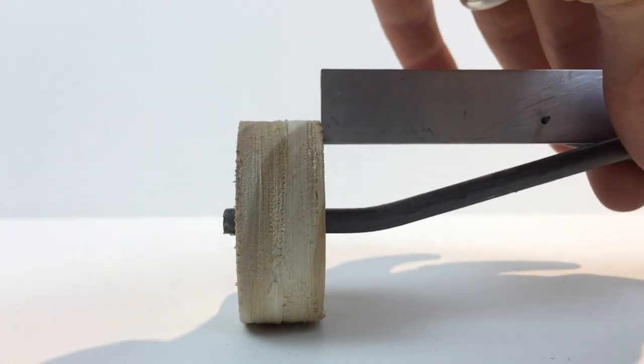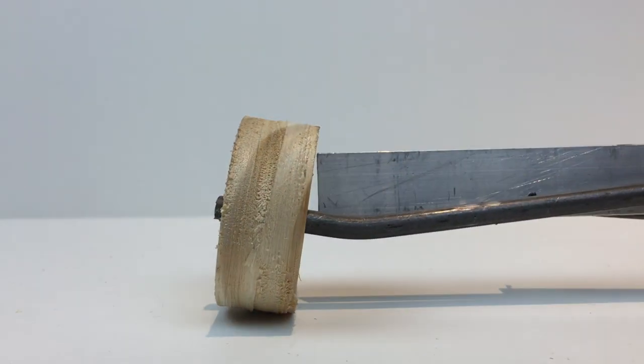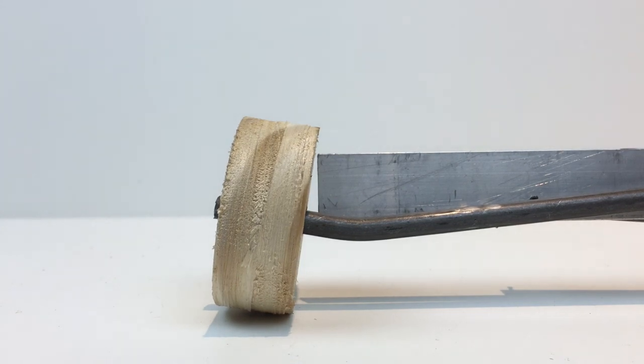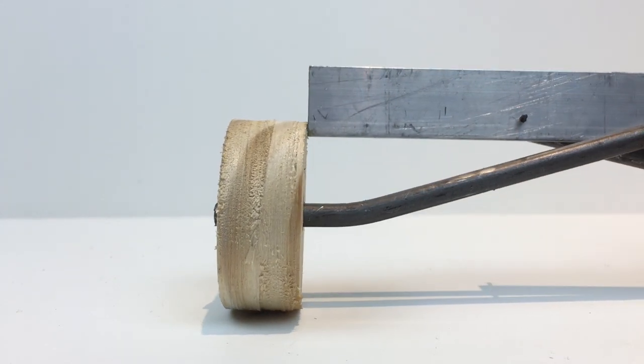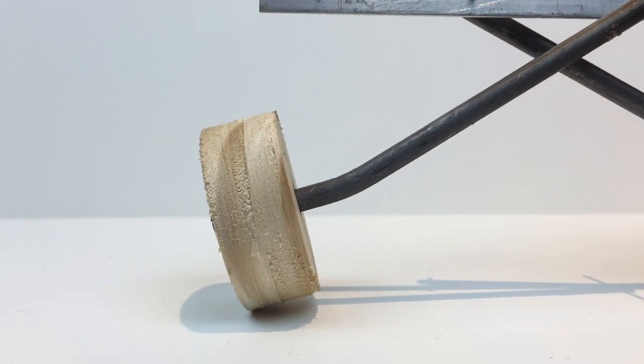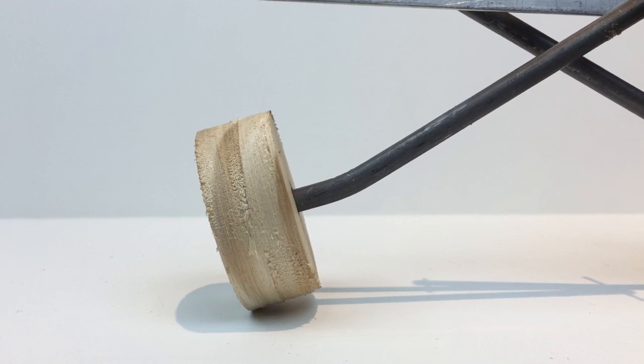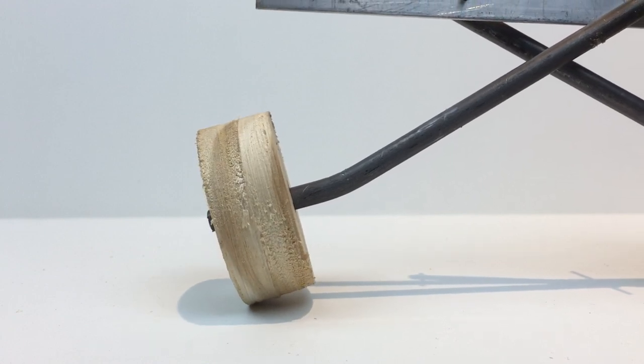So when the suspension would fully compress, we get a very negative camber setting. As the suspension extends, we get a very positive camber on that wheel and tire.